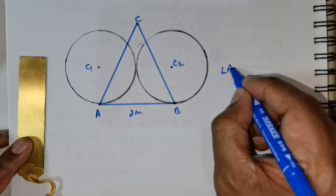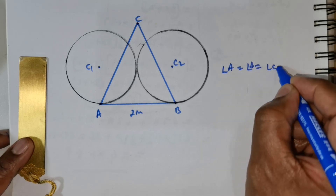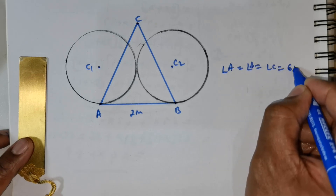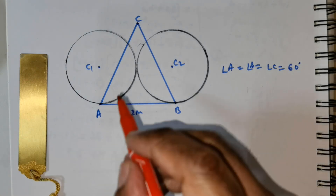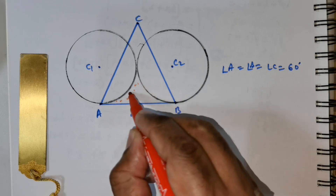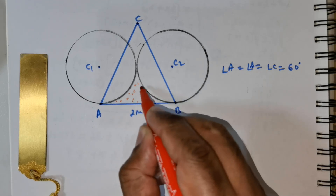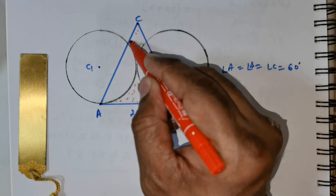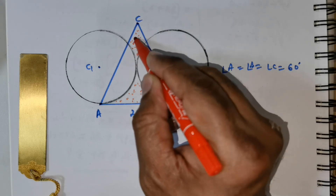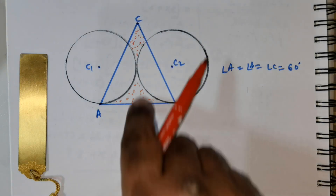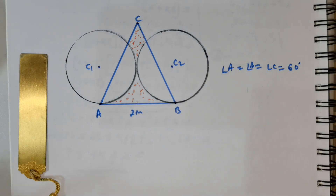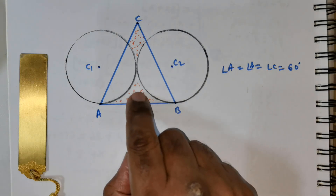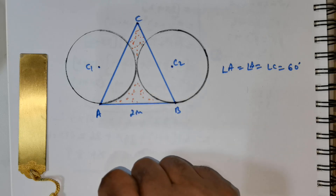Since it is an equilateral triangle, angle A is equal to angle B is equal to angle C is equal to 60 degrees. Now what are we required to find? We are expected to find the area of the portion that I am dotting up with red — this is the area which is required. It is really a good question.